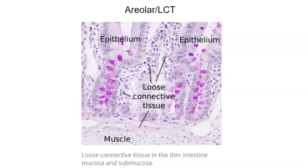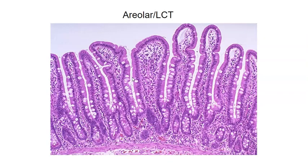Now we're looking at the small intestine. There's the epithelium, and deep to the epithelium we have loose connective tissue — notice the fibers. Here's another image of the small intestine with the simple columnar epithelium, and then right deep to that we see loose connective tissue. Often, just deep to epithelium, we find loose connective tissue — all this material here is loose connective tissue, and this lower portion is muscle.